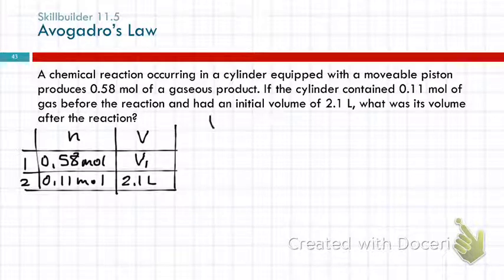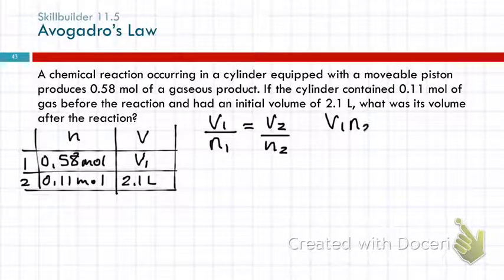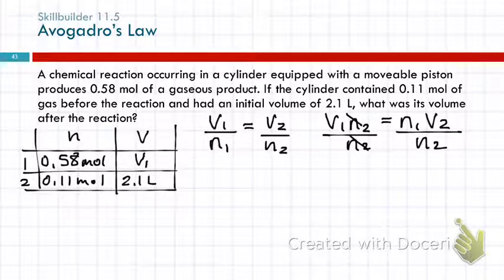Okay, so we need Avogadro's Law, V1 over N1 equals V2 over N2. Cross-multiply to get rid of the pesky fractions. And then we're going to solve this time for V1. To get V1 by itself, we divide by N2, and we do that to both sides. So V1 is N1 V2 over N2.